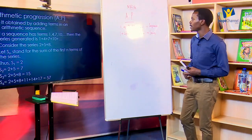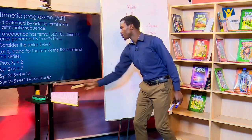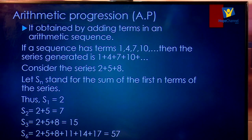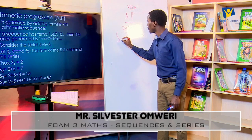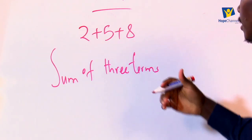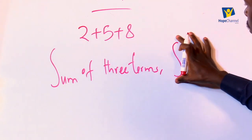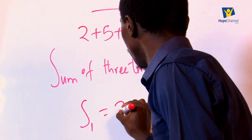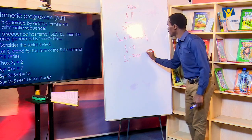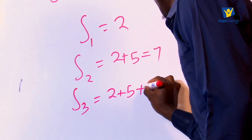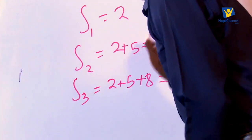Consider the series 2 plus 5 plus 8. If we get the sum of these terms, the sum of one term is 2. The sum of two terms is 2 plus 5, which equals 7. The sum of three terms is 2 plus 5 plus 8, which gives us 15. So the sum of these three terms equals 15.